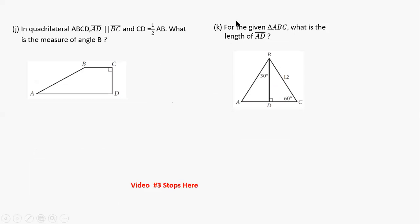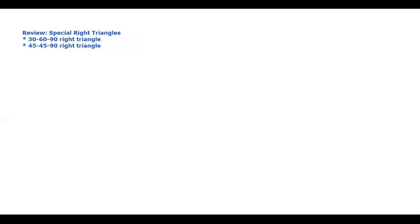Let's go back to the whiteboard and do a little review of what we know about these types of right triangles. So for this video we're going to focus on the two special right triangles: the 30-60-90 and the 45-45-90 degree triangles.